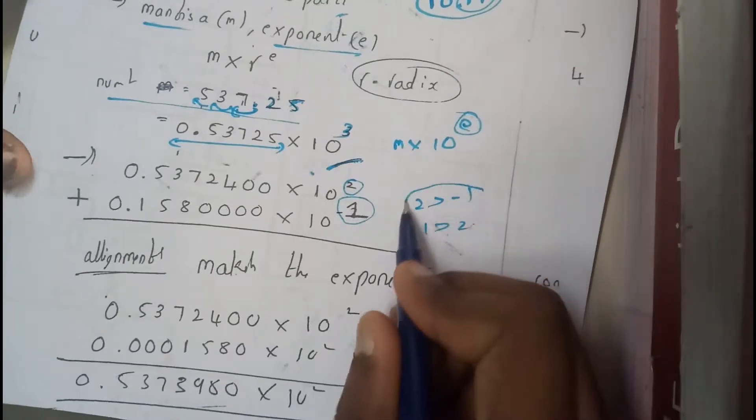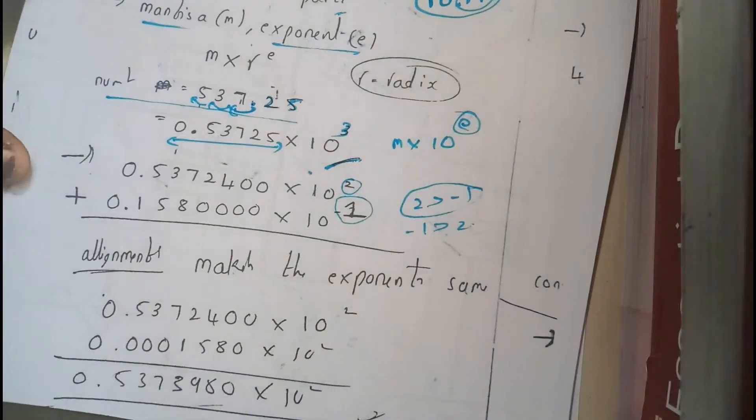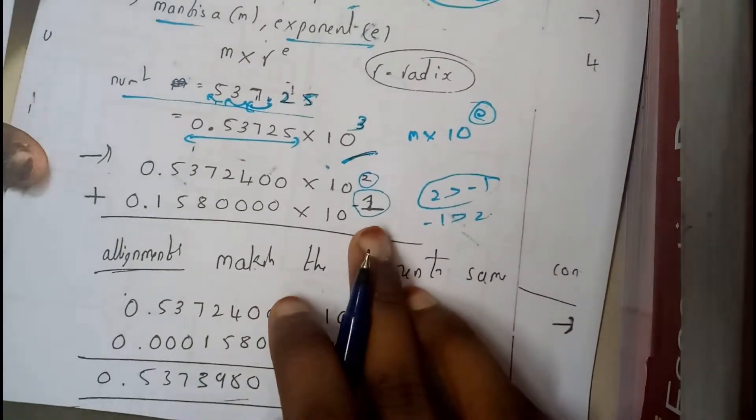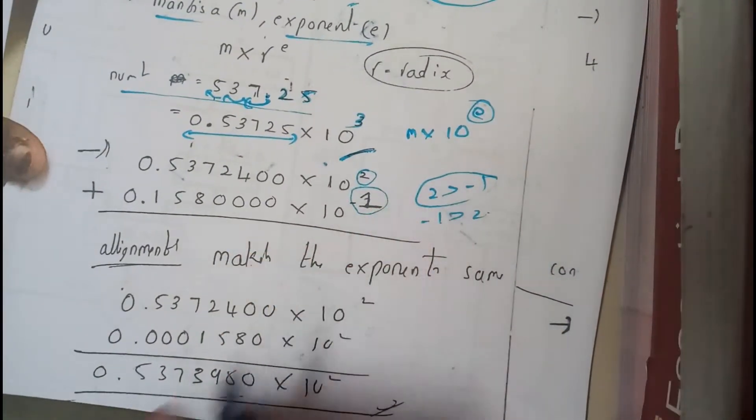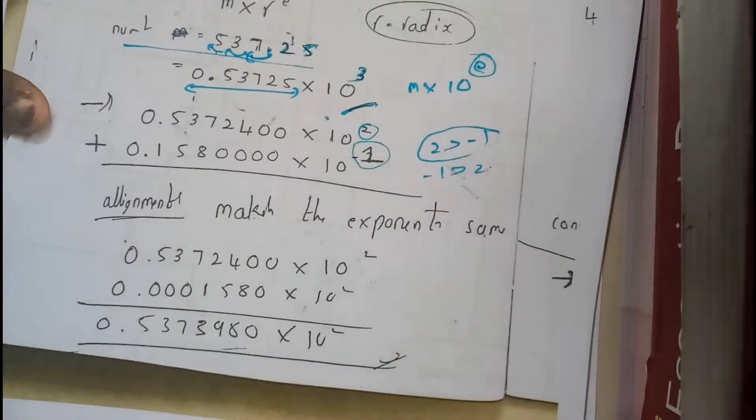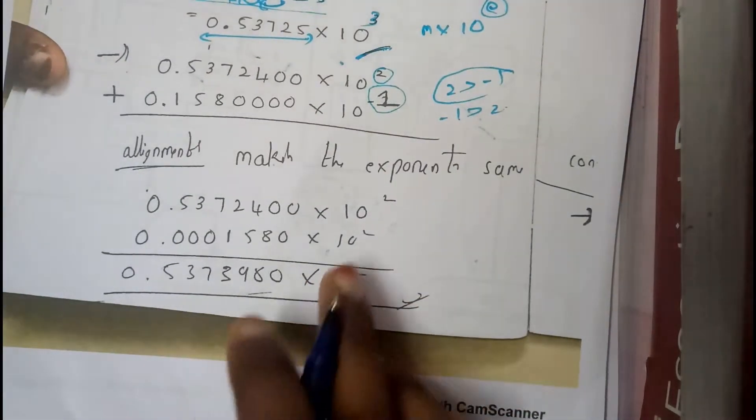Which is greater? Is 2 greater than minus 1 or minus 1 greater than 2? As 2 is greater than minus 1, we will be making both the powers to be 2. To make this power to 2, we can just multiply into 10 to the power of 3. That's what we have just done here, so we got this as our result.